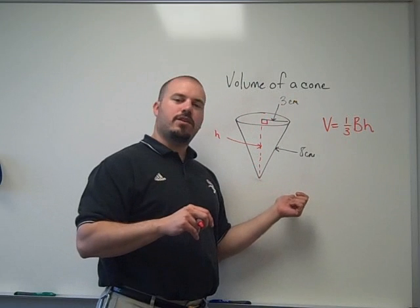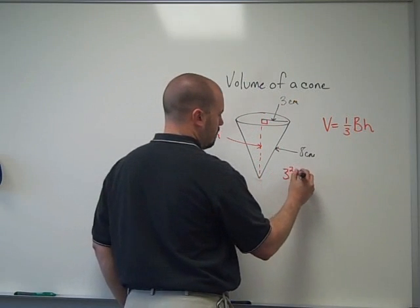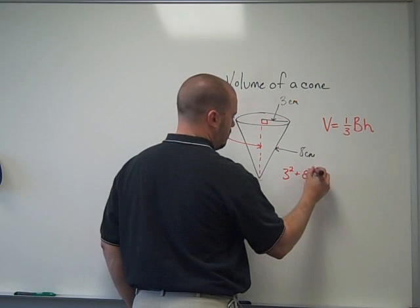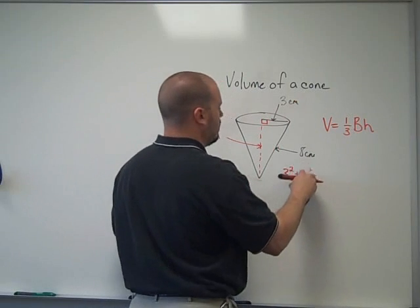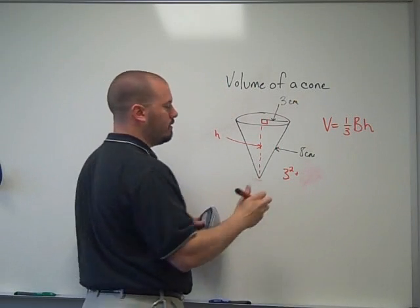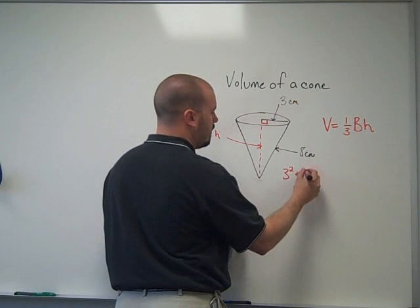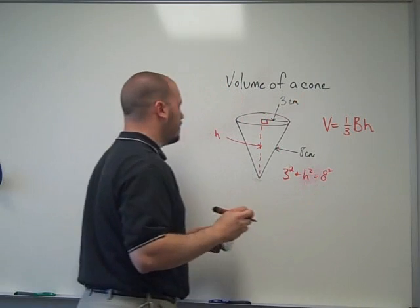With that, we know that we can use the Pythagorean theorem. The slant height is actually the hypotenuse, so I need to actually do 3 squared plus h squared equals 8 squared.